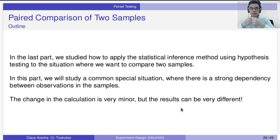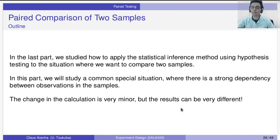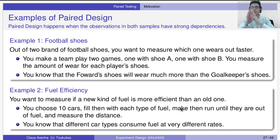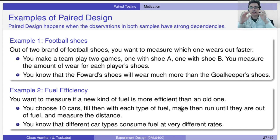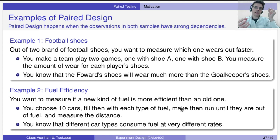In this video, I'm going to show you a special situation that is very common, but it can change your results very much, so you need to be careful about it. The idea is pair design. Pair design happens when you have an experiment where observations are linked in sample one and sample two, and they have strong dependencies.